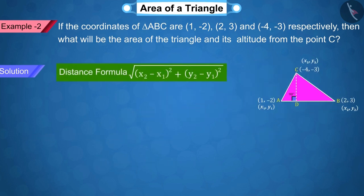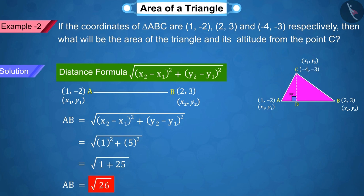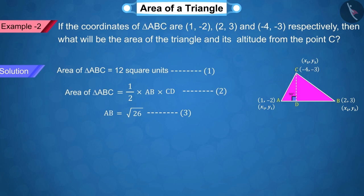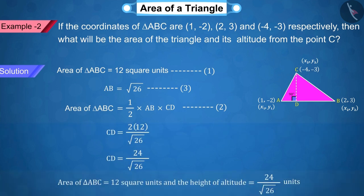With the help of the distance formula, the value of AB is obtained as square root of 26, which is represented by equation 3. Because we have to find the altitude, we rewrite equation 2 and substitute the values of equations 1 and 3 in it, from which the height of the altitude from the point C is obtained as 24 by square root of 26 units.